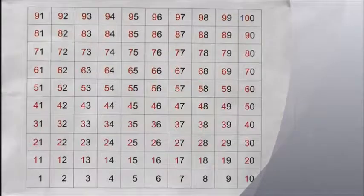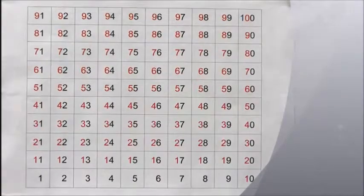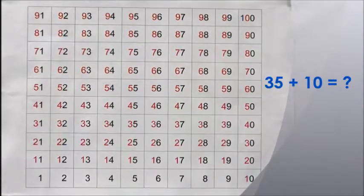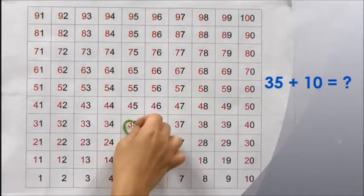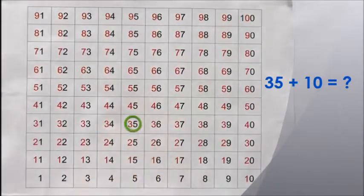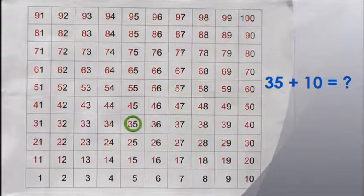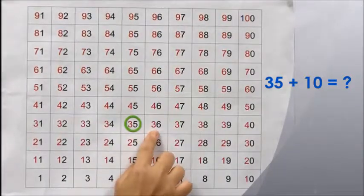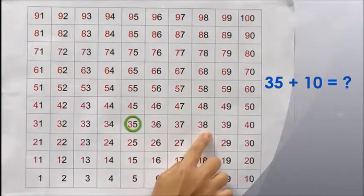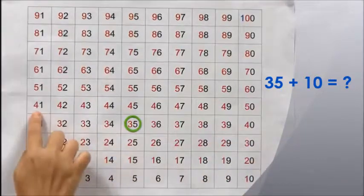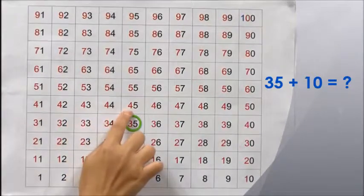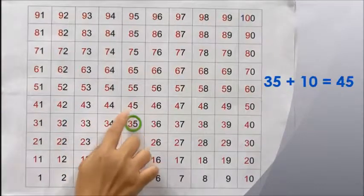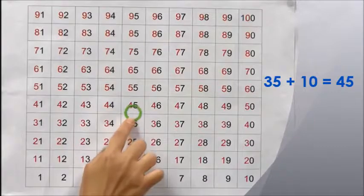Let's see another example: 35 plus 10. We shall start from 35. Let's move 10 steps forward: 1, 2, 3, 4, 5, 6, 7, 8, 9, 10. 35 plus 10 equals 45.